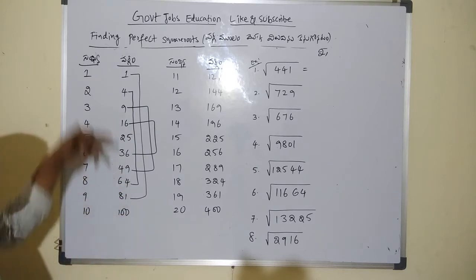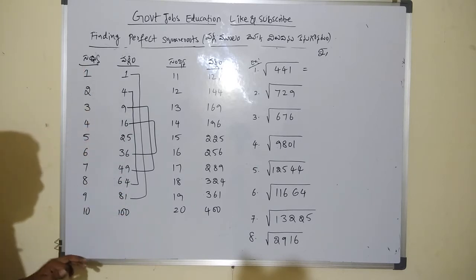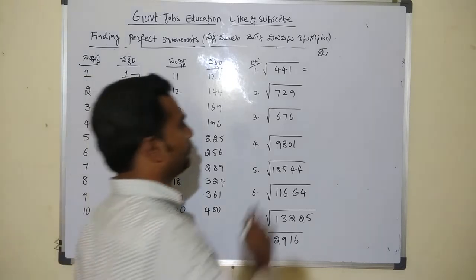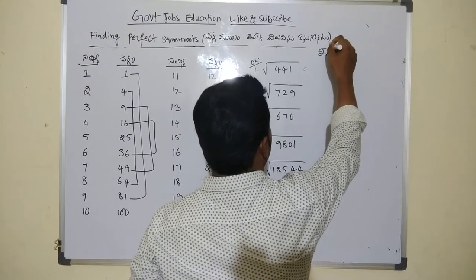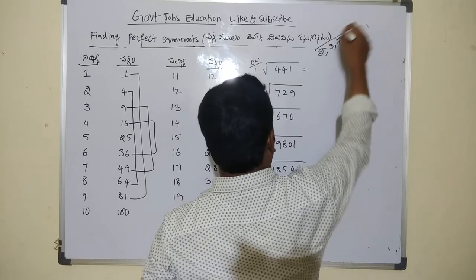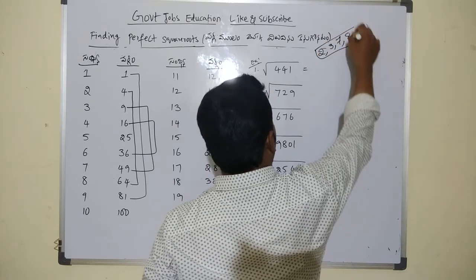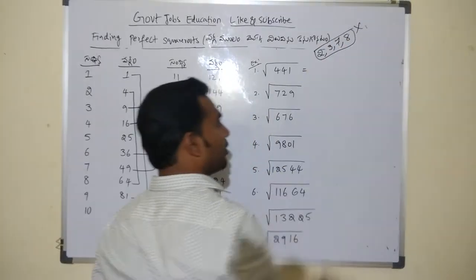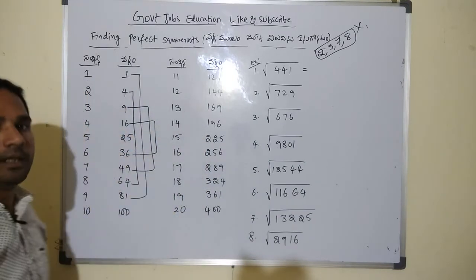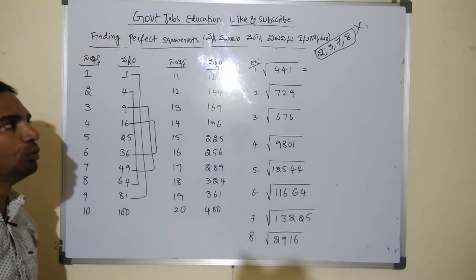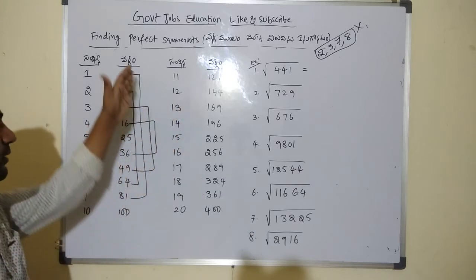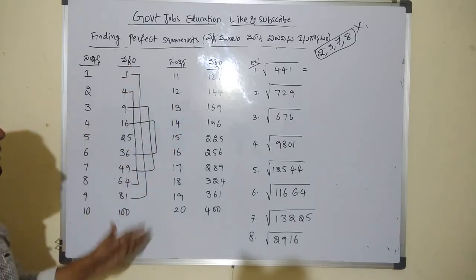Key rule: if a perfect square value ends in 2, 3, 7, or 8 at the unit place, then it is NOT a perfect square. Any number ending in 2, 3, 7, or 8 cannot be a perfect square.